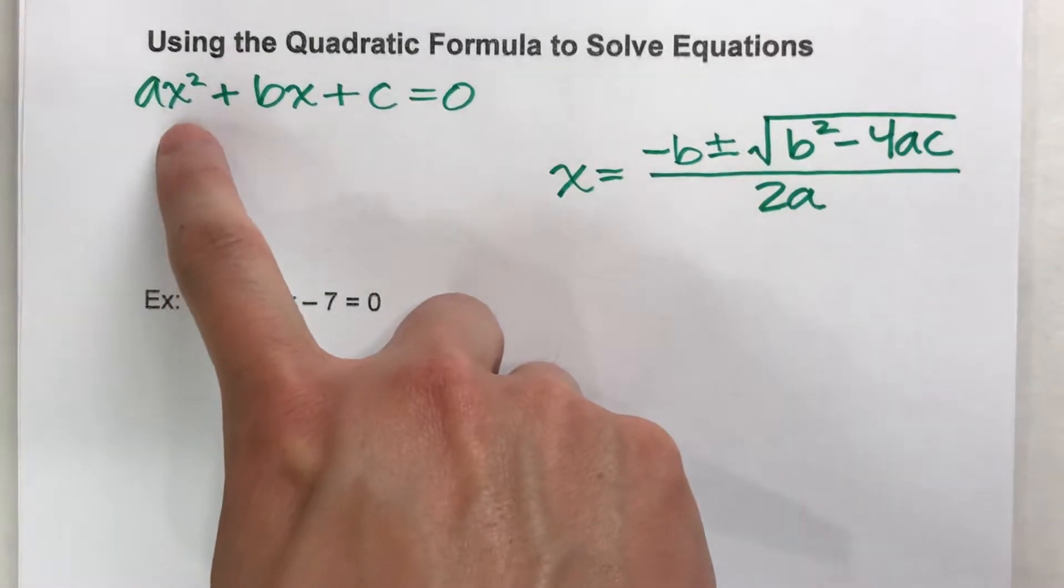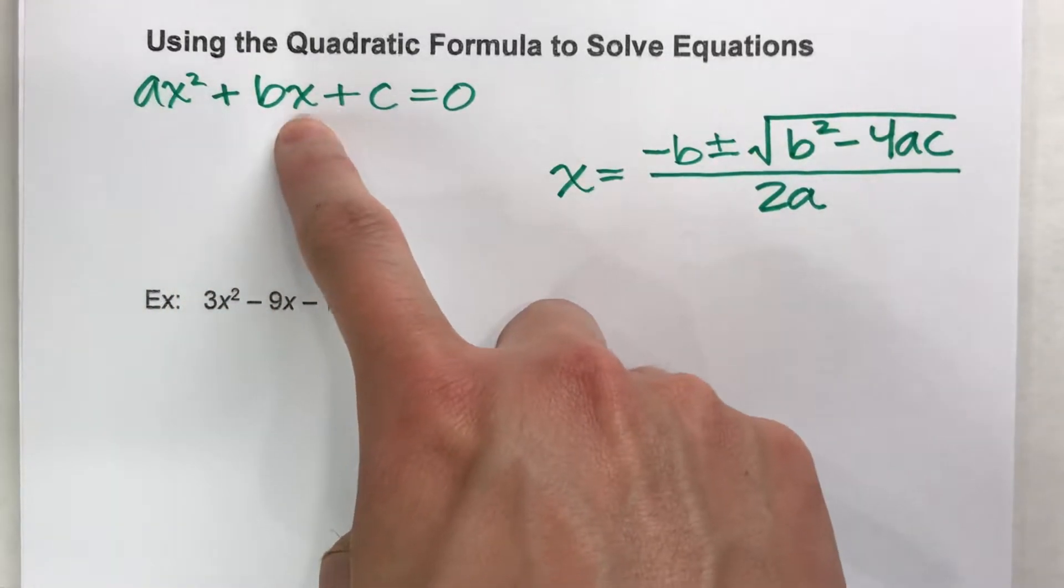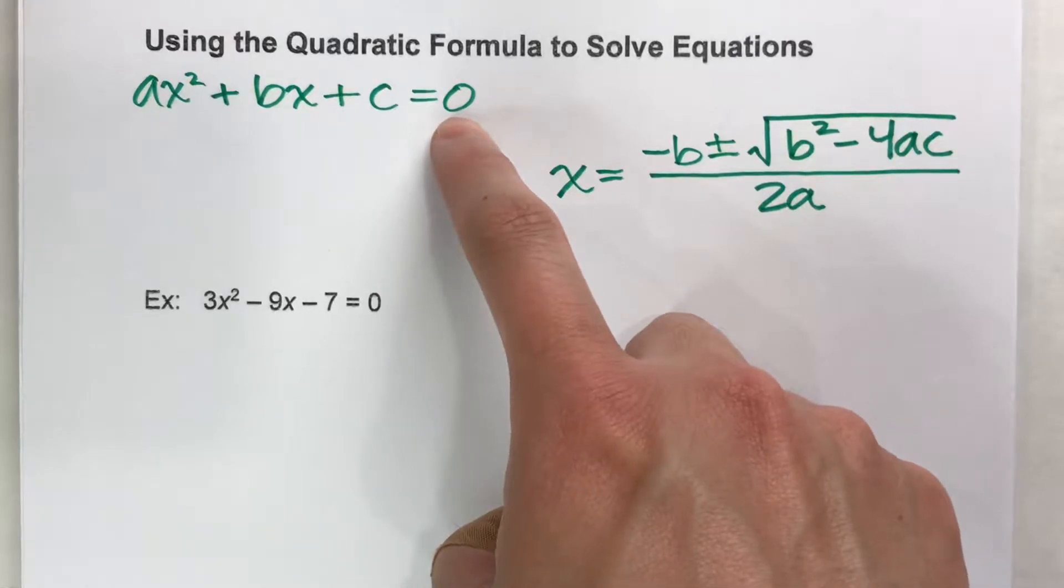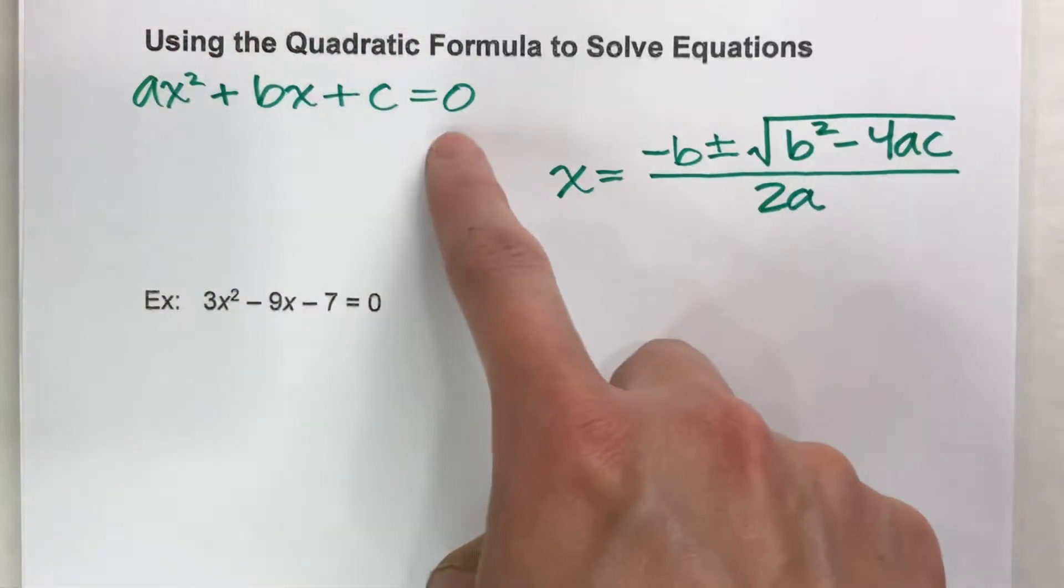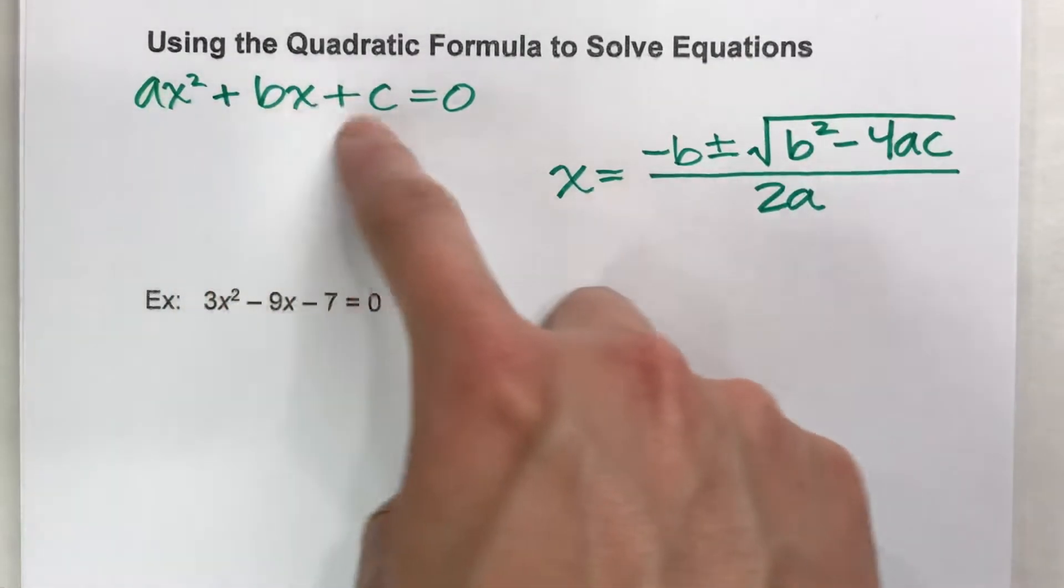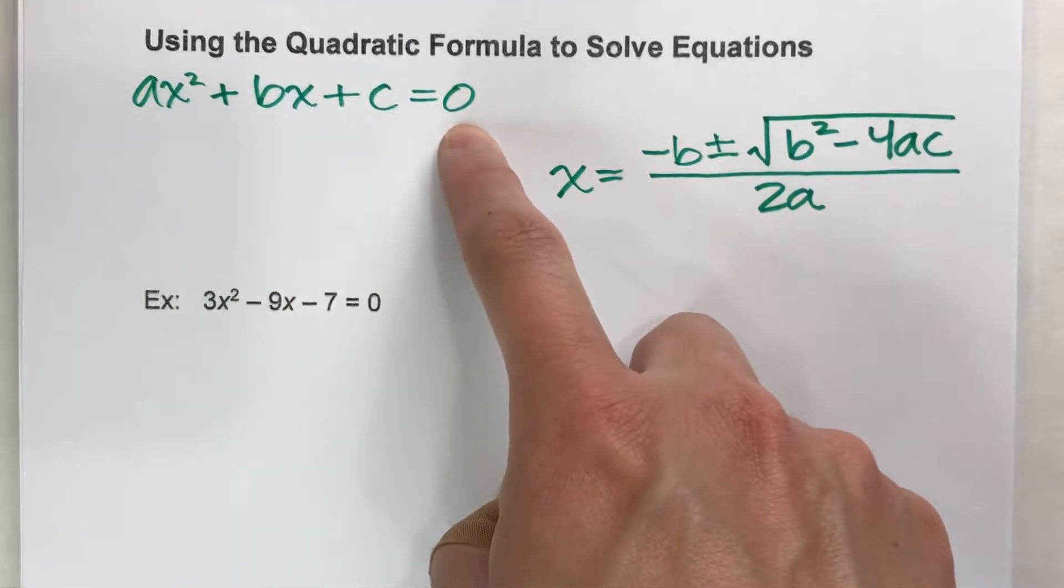And the equations are going to be in this form, ax squared plus bx plus c equals zero. So make sure your quadratic is in this form, where all the terms are on one side of the equal sign and it's equal to zero on the other side.